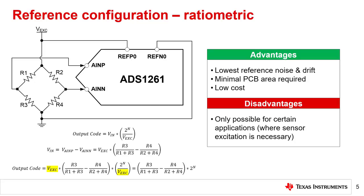A ratiometric reference configuration uses the same excitation source for the analog input and the reference voltage as illustrated by this resistive bridge measurement.